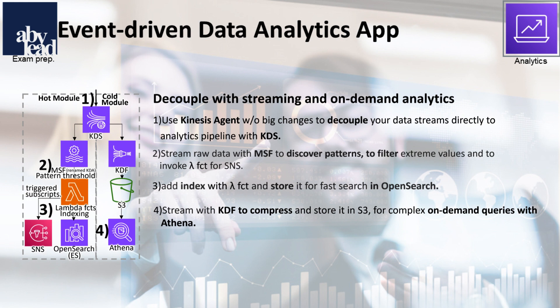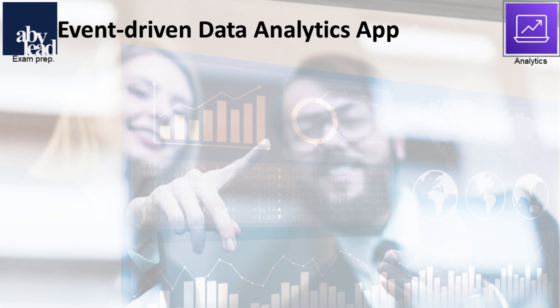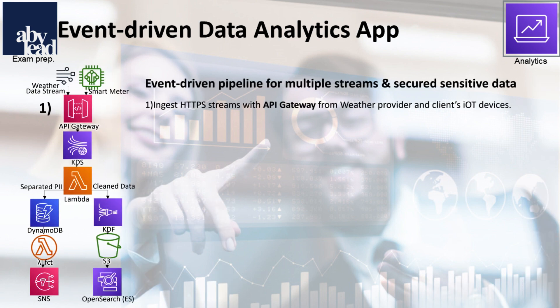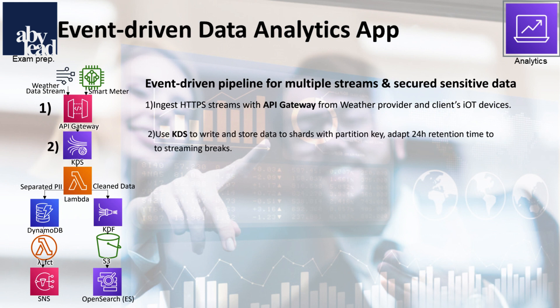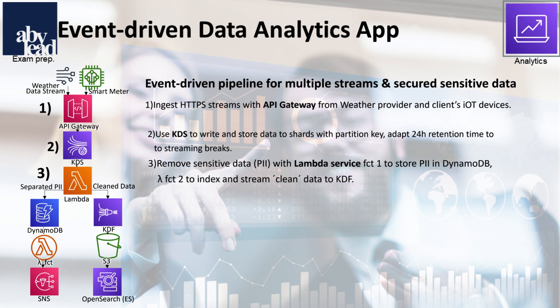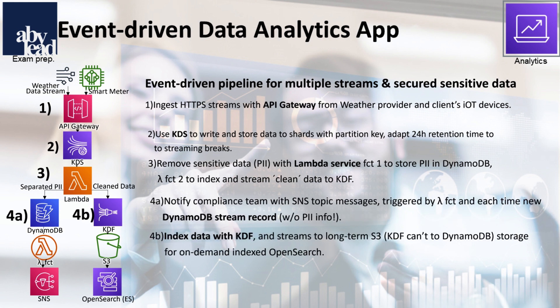Data privacy is certainly a primacy. To optimize your client's energy cost, you connect smart meters and weather data streams with API Gateway in your event-driven app. KDS gathers all data streams in a secured table partition to protect your client's sensitive information. The Lambda function separates sensitive and analytical data in KDS storage. It then stores notifications in a DynamoDB table and distributes the message via SNS to the compliance team. The analytical data is sent to KDF for indexing and long-term storage in S3. Finally, with OpenSearch you can search the non-sensitive data for further processing and views.